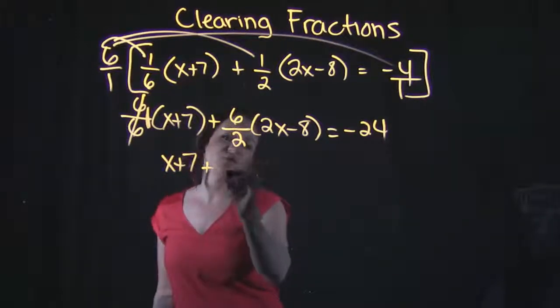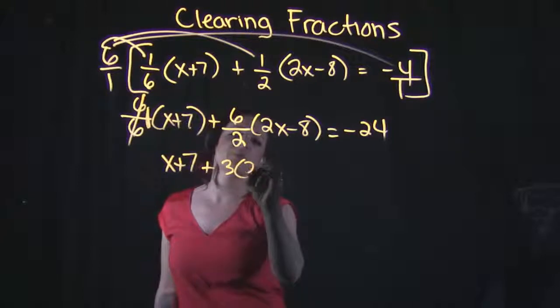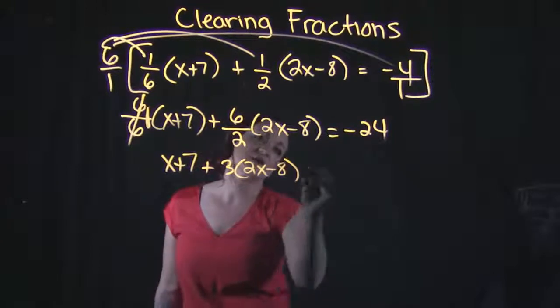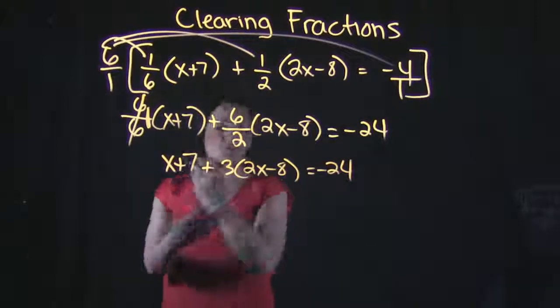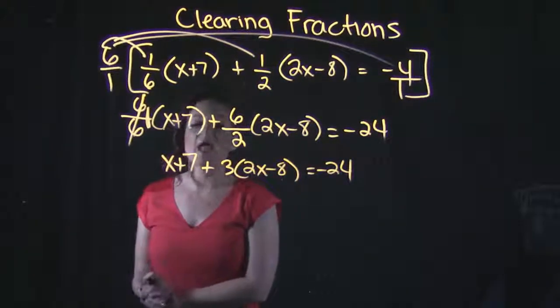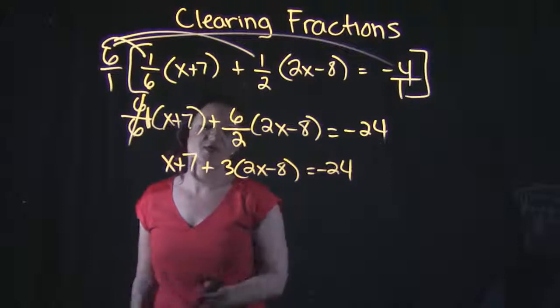Plus six over two is three. Drop down the two x minus eight with it, equals negative 24. From this point, we can distribute to combine like terms and start solving our equation here.